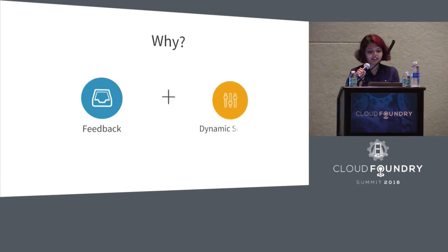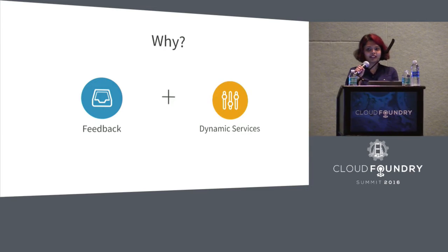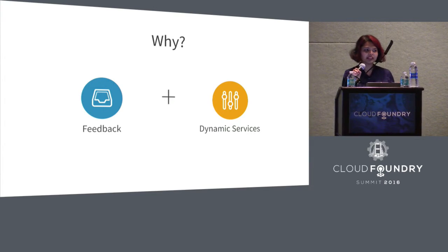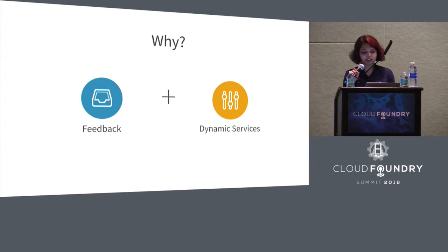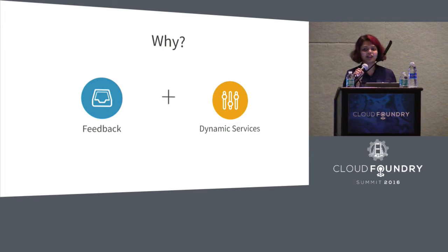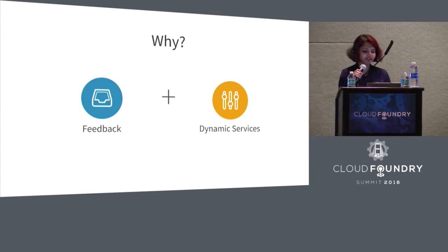At Pivotal, as we were using Bosch for deploying dynamic services, we noticed there wasn't really a great way to share properties between deployments or to share networks between deployments. So these were some of the things we wanted to address for the past year, and this is what this talk is about — how we addressed some of that in Bosch.